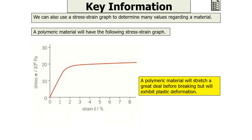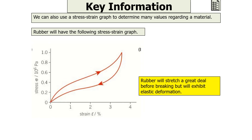A polymeric material, such as a polymer, will stretch a great deal before breaking but will exhibit plastic deformation, as shown by a curved line on its stress-strain graph. Rubber will also stretch a great deal before breaking, but will exhibit elastic deformation. You can see this because on the unloading curve of the stress-strain graph, the line returns back through the origin — so when the force is removed, it returns to its original shape.